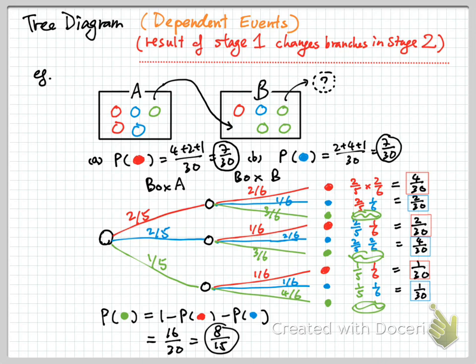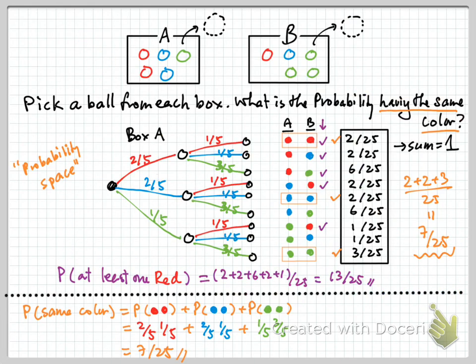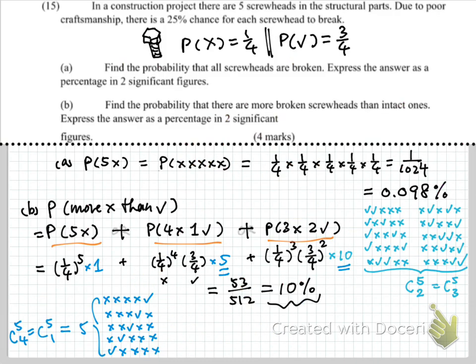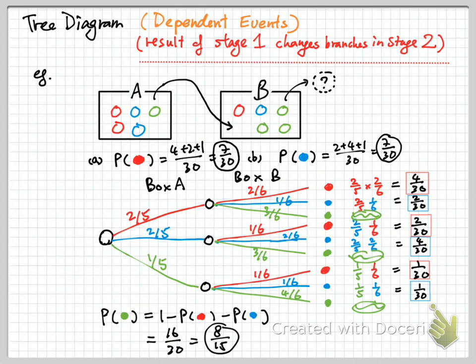So this is one example about dependent events. The difference is that for dependent events, the second stage will not always be the same — it might change depending on what had happened earlier. While previously, for independent events, there's no change — always the same.